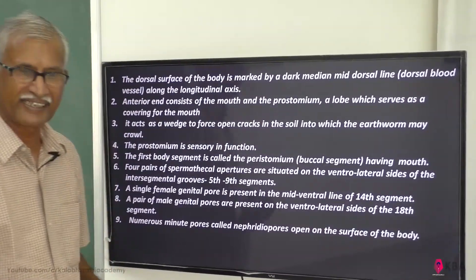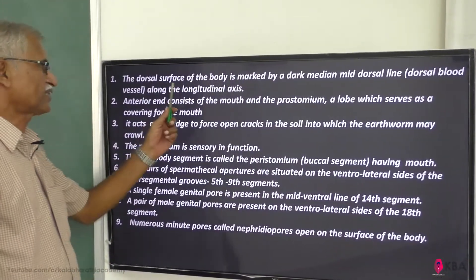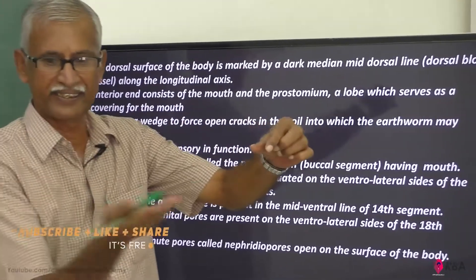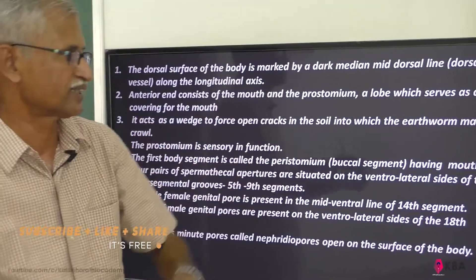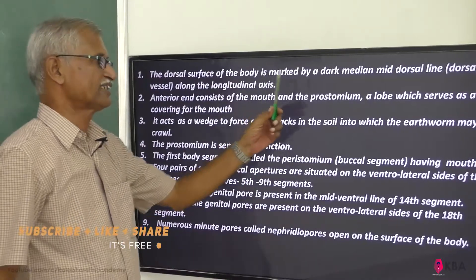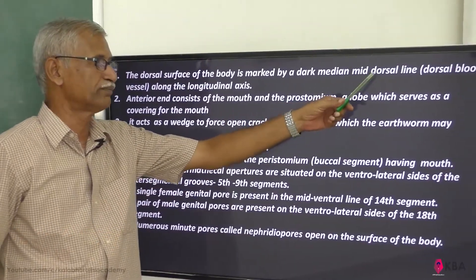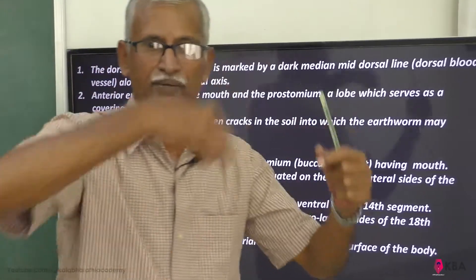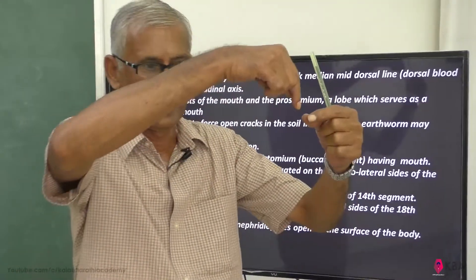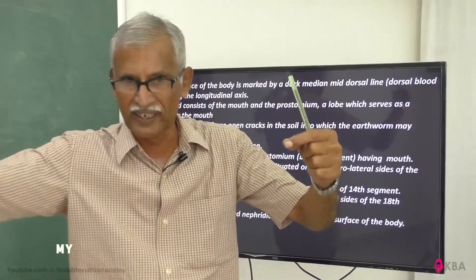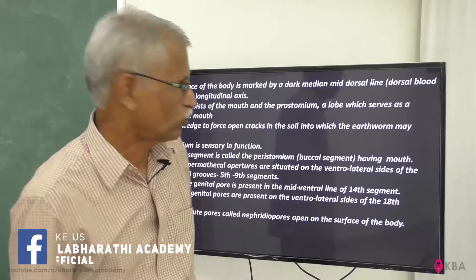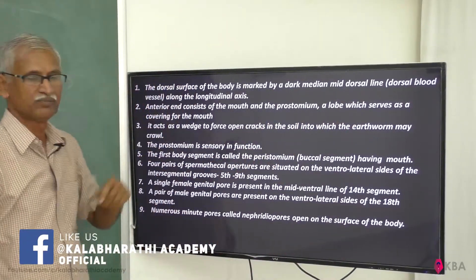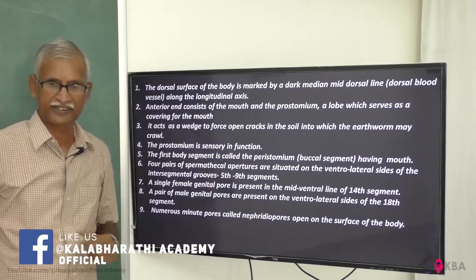We will talk about external morphology — the dorsal surface. The body is marked by a dark, medium mid-dorsal line. The code is called the dorsal blood vessel, which runs along the longitudinal axis.